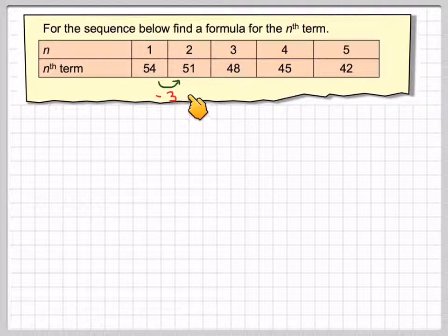If you notice, if you go from 54 to 51, you have to take 3, the same from 51 to 48, the same from 48 to 45, and the same from 45 to 42.